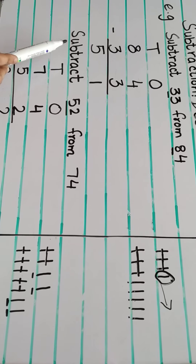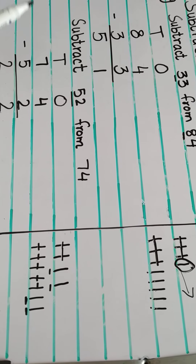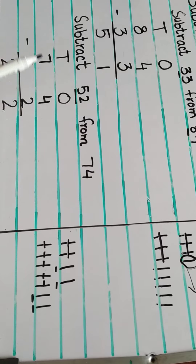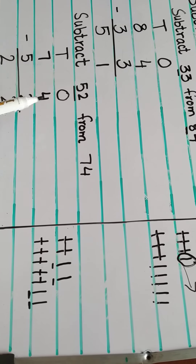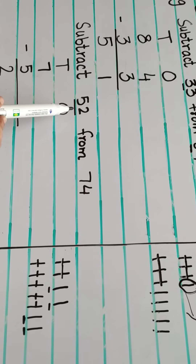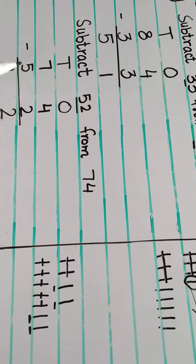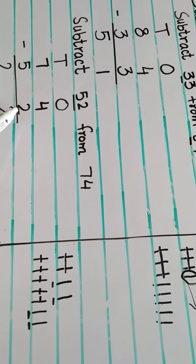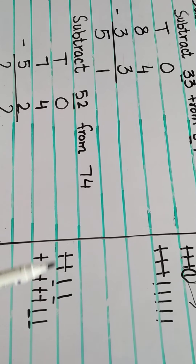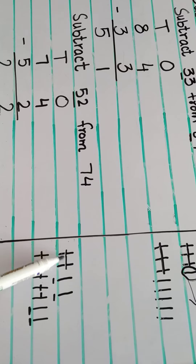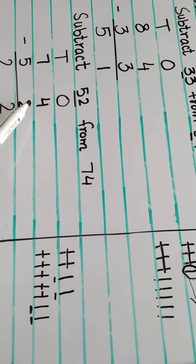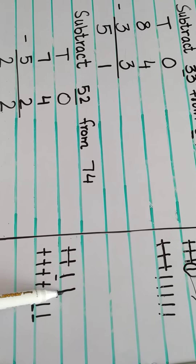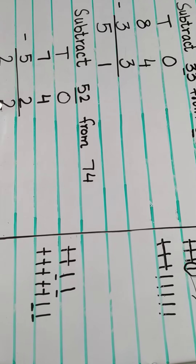Now the second example — subtract 52 from 74. Tens column, ones column. First write 7 in the tens and 4 in the ones. We are going to subtract 52 from 74. Write 5 in the tens column and 2 in the ones column. In the ones column the first number is 4. Draw 4 lines: 1, 2, 3, 4. We are going to subtract 2: 1, 2. Count the ones left: 1, 2. So 4 minus 2 is 2.